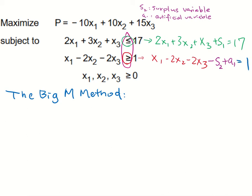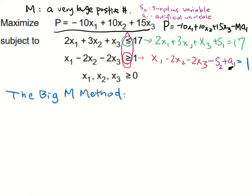The objective function will be changed to: P equals negative 10x1 minus 10x2 plus 15x3, and here we want to subtract M times a1. The a1 is the artificial variable we introduced into the second equation, and M we can consider as a very large positive number.